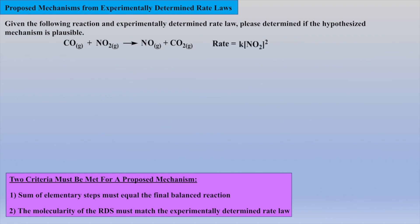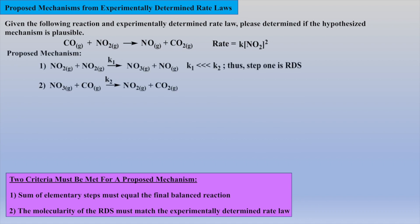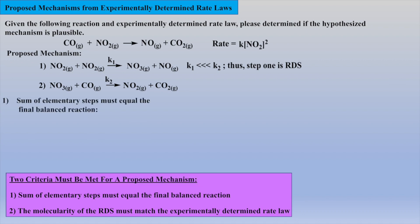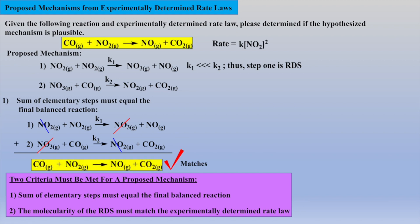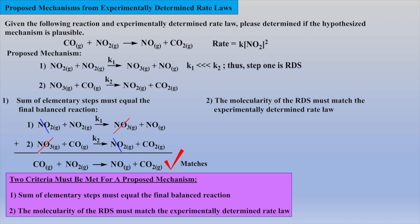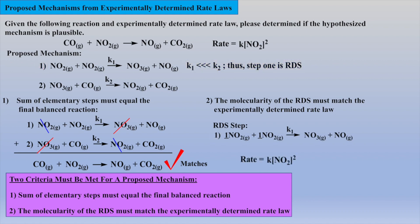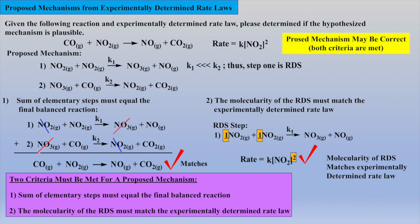In the next example reaction, we are again given a previously experimentally determined rate law. The reaction is believed to follow a two-step mechanism, and we are asked if this mechanism is plausible. Canceling the NO3 intermediate and the extra mole of NO2 before adding the proposed elementary reactions affords the final reaction, which matches the stoichiometry of the given reaction. The rate constant for step one is much less than the rate constant for step two; thus, step one is the RDS. The molecularity of step one matches the experimentally determined order, which is second order with respect to NO2. Thus, this hypothesized mechanism may be correct.